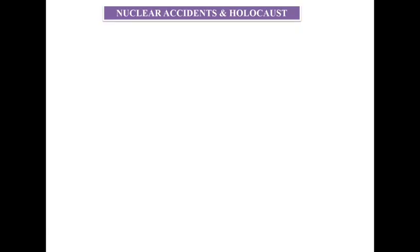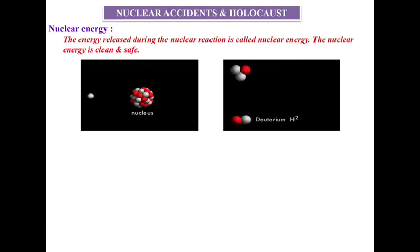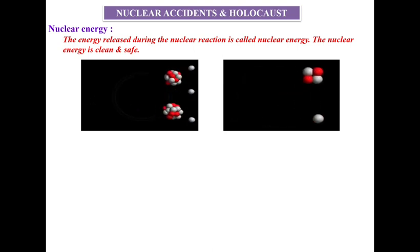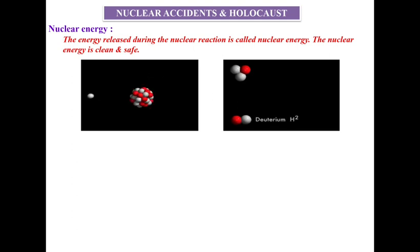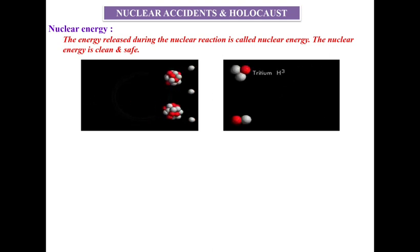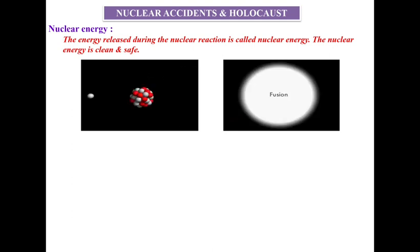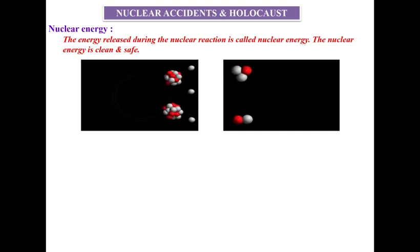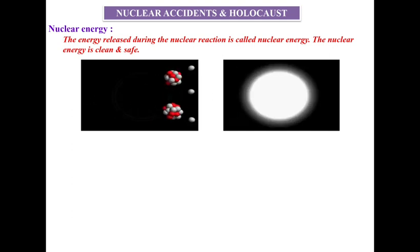Let me proceed with the topic. First, we have to know about nuclear energy. The two videos show: the first one is a nuclear fission reaction and the second one is a nuclear fusion reaction. During the processing of these two reactions, there will be the production of an enormous amount of heat energy, called nuclear energy, along with the release of some neutrons. Nuclear energy is clean and safe, but we have to handle these things very carefully and dispose the nuclear waste very carefully.